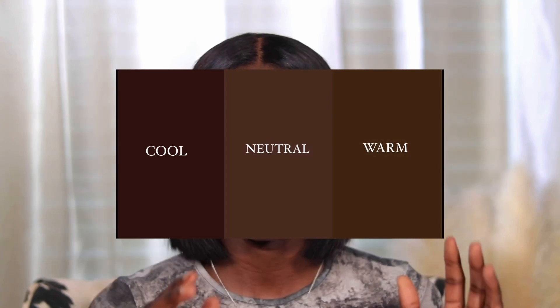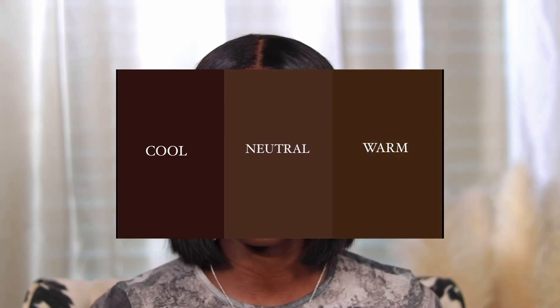With a cool undertone your skin will probably have a pink tint. With a warm undertone your skin will have a golden or yellow tint. With a neutral undertone your skin has a mixture of both — not just pink, not just yellow or golden, but a mix.